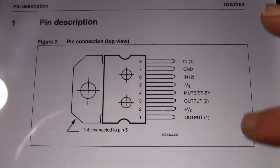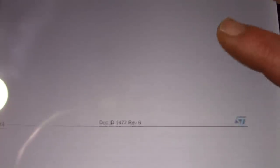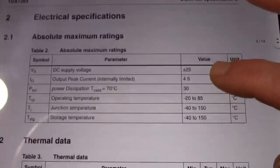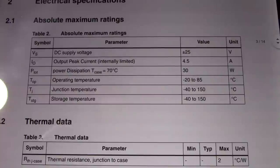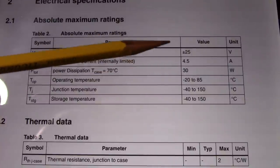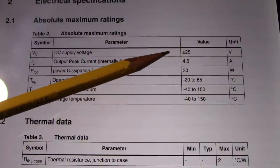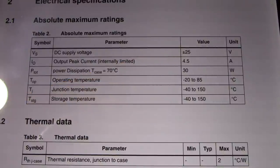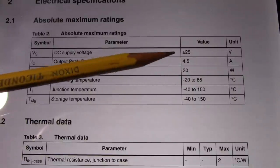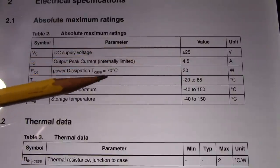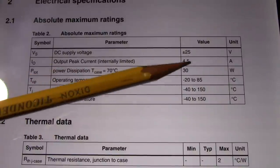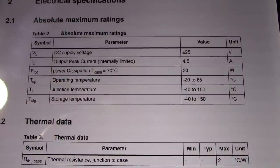These are the pinouts. Of course, you'd want to download this data sheet if you'd want to build the amplifier. The maximum DC supply voltage is plus minus 25 volts. That means it requires a dual supply or bipolar type DC supply. And output peak current 4.5 amps.